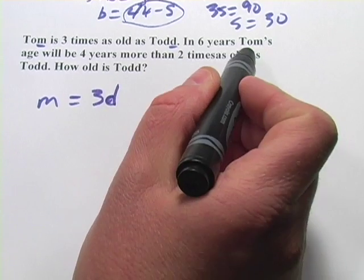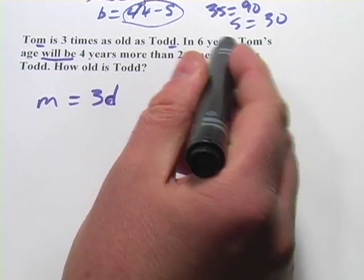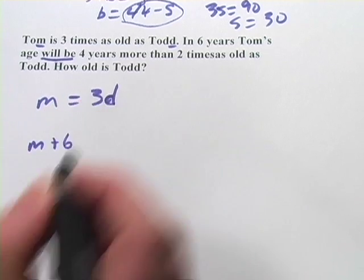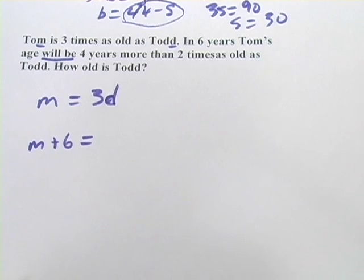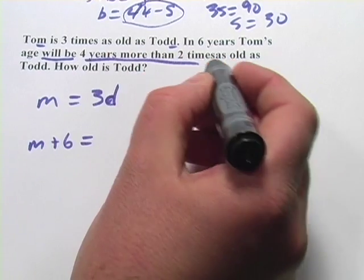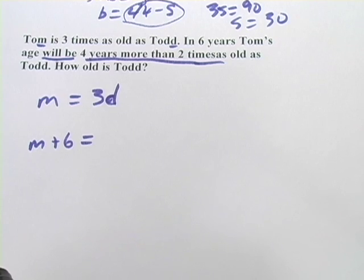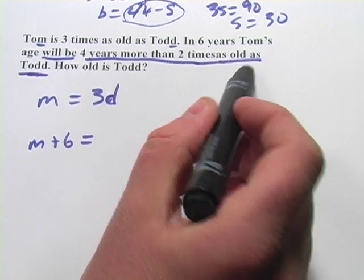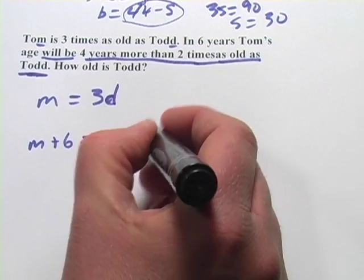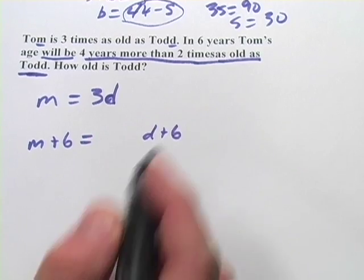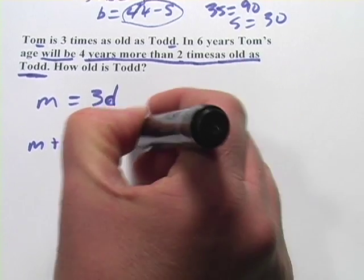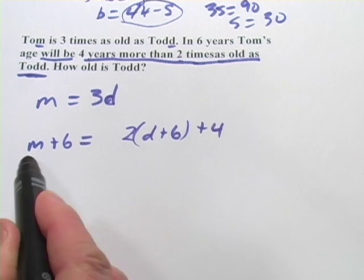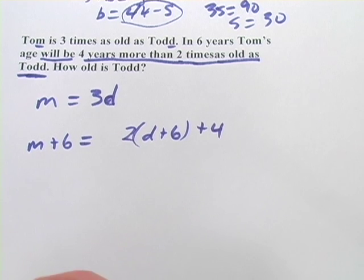Now we have in six years, Tom's age will be... So what's Tom's age in six years? It's M plus six. That will be is our form of to be, which is usually the equal sign. And here's the expression that's going to go on the right. Four years more than two times as old as Todd. And we have to be careful here because this is in six years. So how old will Todd be in six years? D plus six. And we have two times as old as that, plus four. Four years more than two times as old as Todd in six years. So that's our second equation.